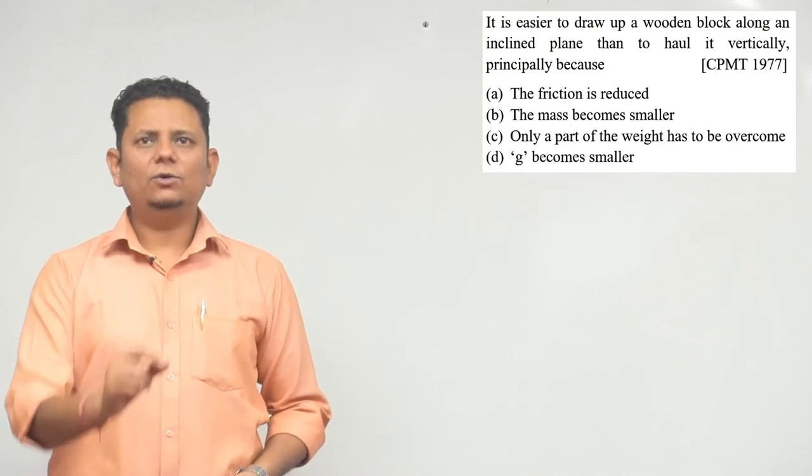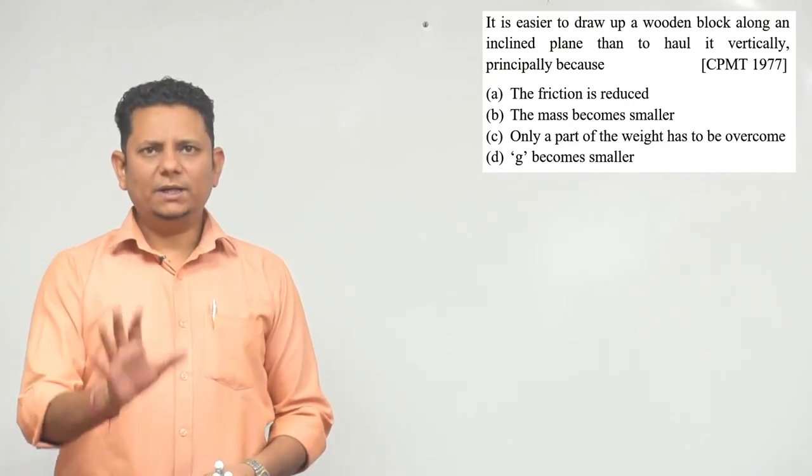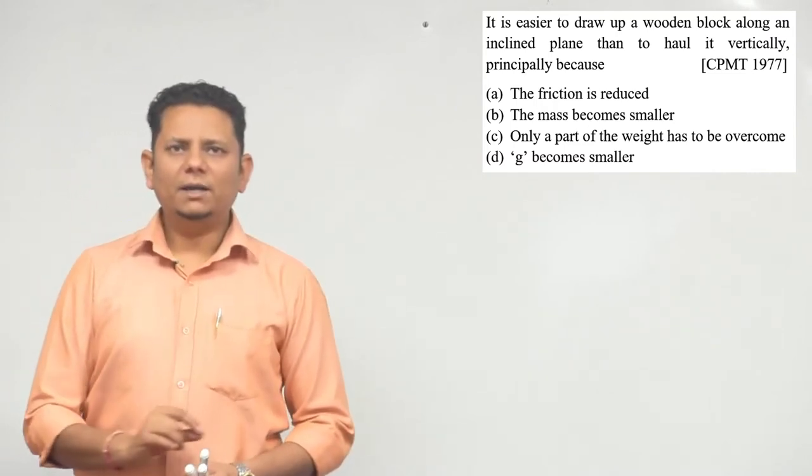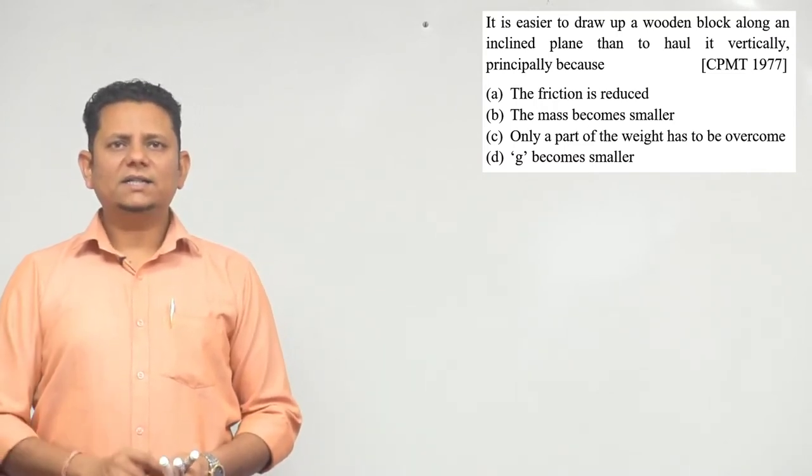The next question says: it is easier to draw up a wooden block along an inclined plane than to haul it vertically, principally because... Four options are given: (a) friction is reduced, (b) mass becomes smaller, (c) only